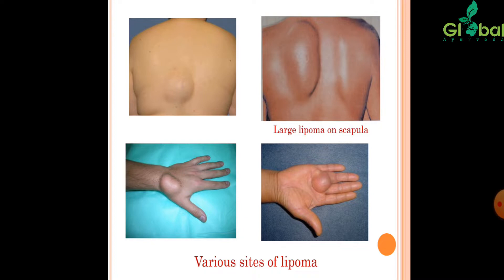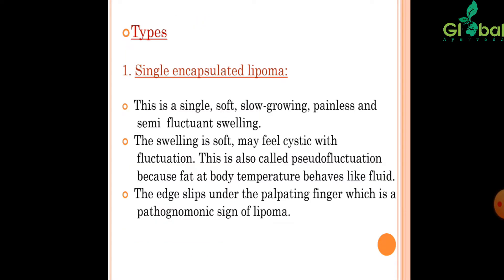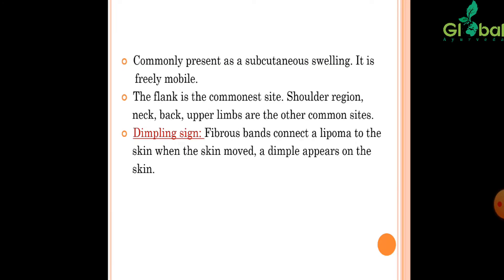Single Encapsulated Lipoma. This is a single, soft, slow-growing, painless, and semi-fluctuant swelling. The swelling is soft and may feel cystic with fluctuation, also called pseudo-fluctuation, because fat at body temperature behaves like fluid. The edge slips under the palpating finger, which is a pathognomonic sign of Lipoma. It is commonly present as a subcutaneous swelling and is freely mobile. The flank is the commonest site, followed by the shoulder region, neck, back, and upper limbs. Dimpling sign: fibrous bands connect the Lipoma to the skin; when the skin is moved, a dimple appears.